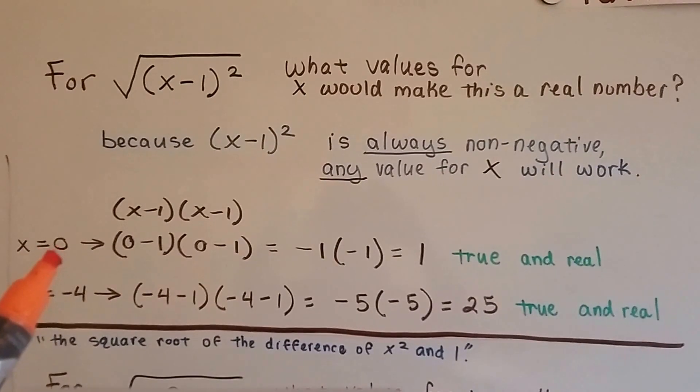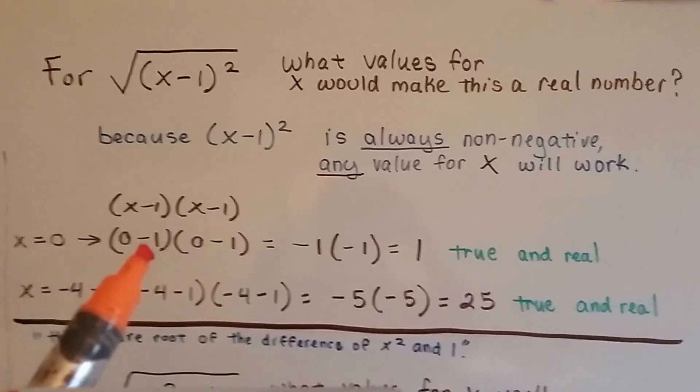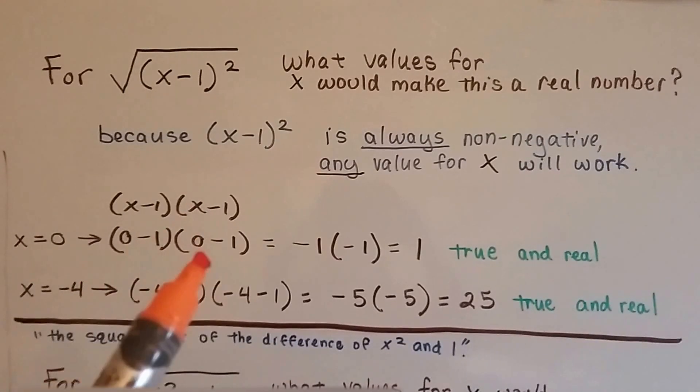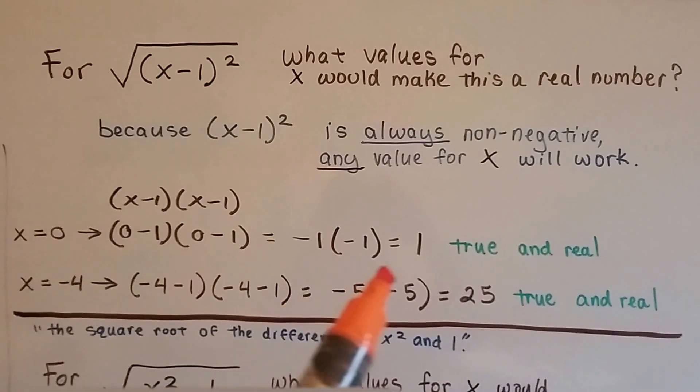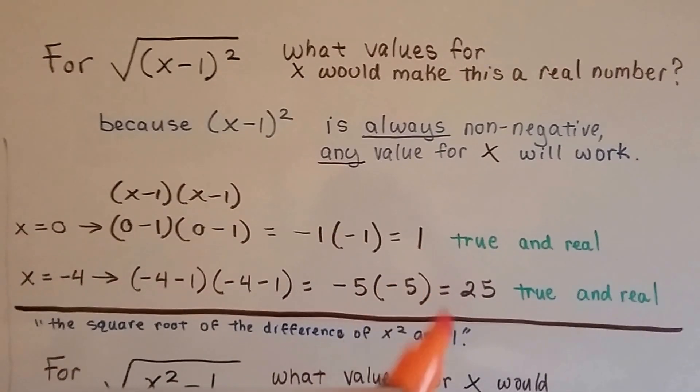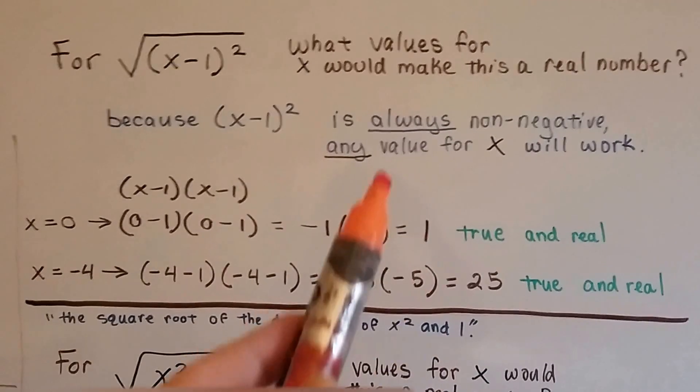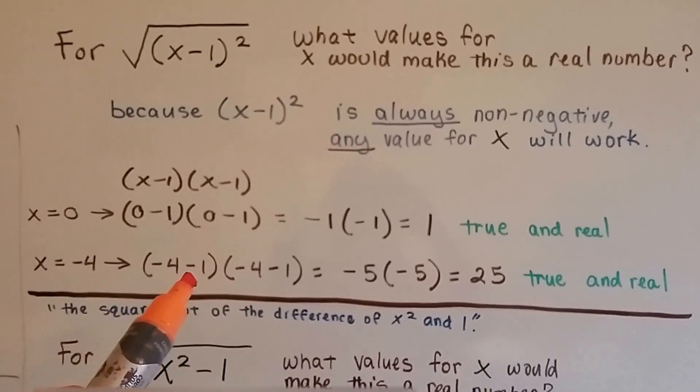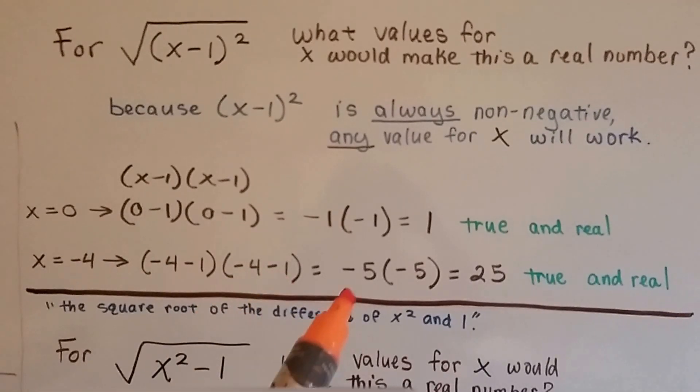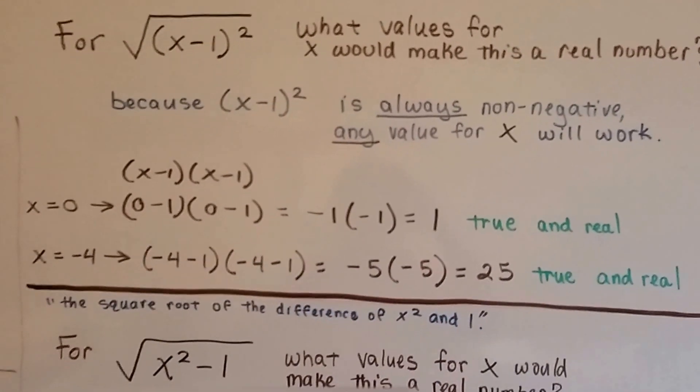So, if we have 0, then we've got x equals 0. We've got 0 minus 1, which is negative 1, and 0 minus 1, which is negative 1. That's a negative 1 times a negative 1. That's a positive 1. See? It doesn't matter what we make x, it's going to end up becoming a non-negative. We start with a negative 4. Negative 4 minus 1 times negative 4 minus 1 is negative 5 times negative 5. That's a 25, and that's true and real.